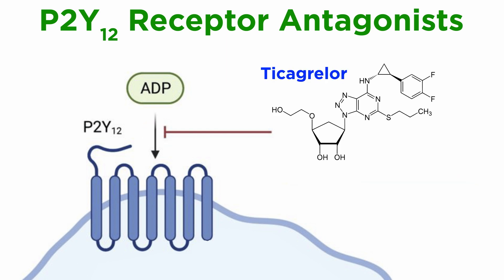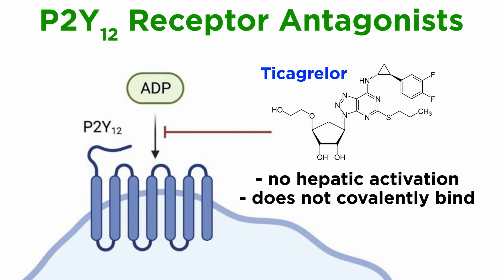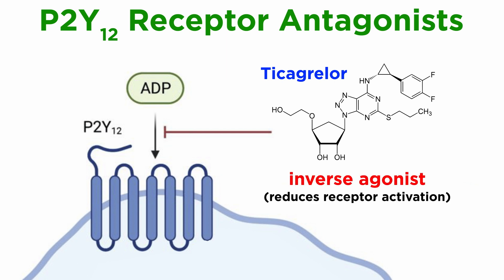Another newer, structurally distinct drug known as ticagrelor doesn't require hepatic activation and doesn't covalently bind to the P2Y12 receptor, but does act as an inverse agonist, which reduces the spontaneous activation of the P2Y12 receptor.